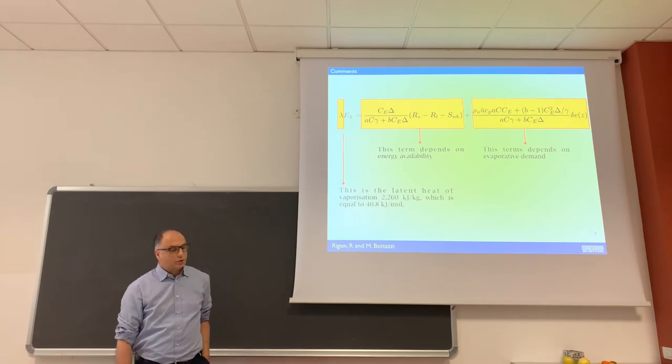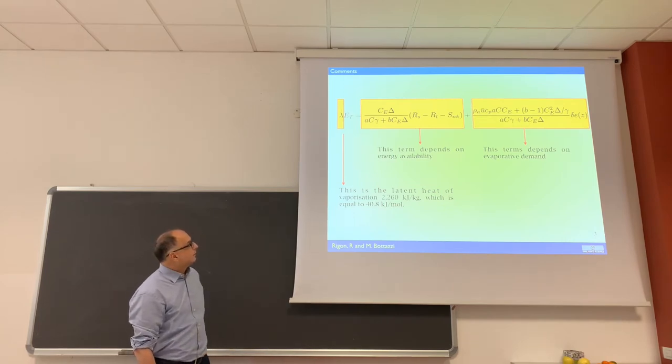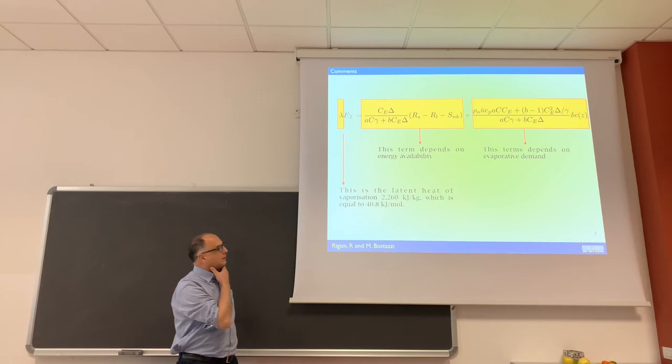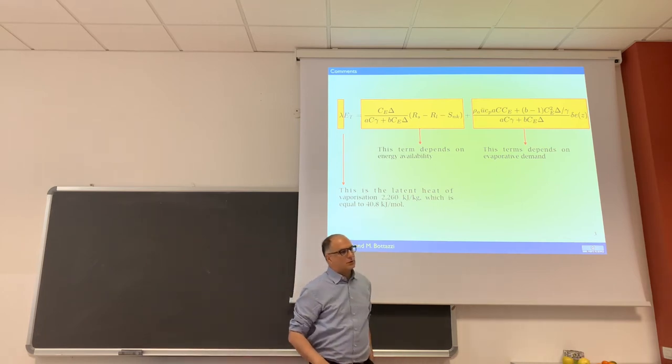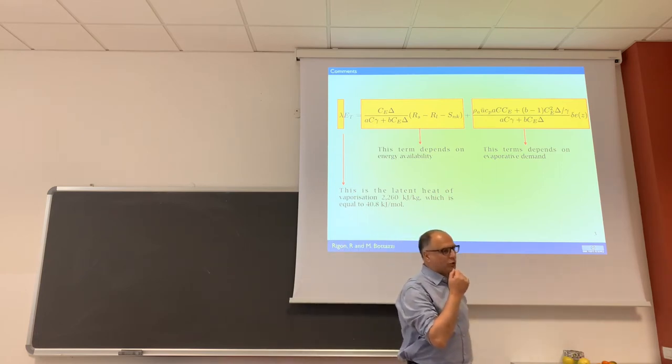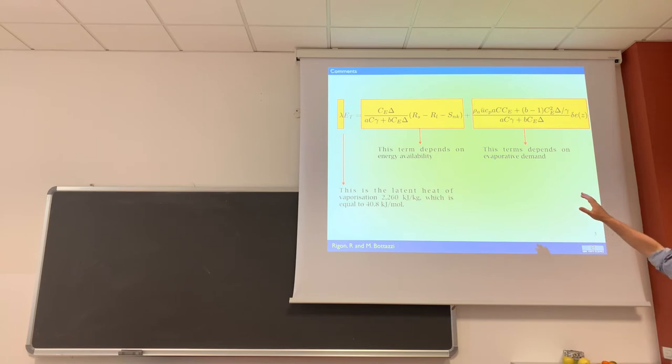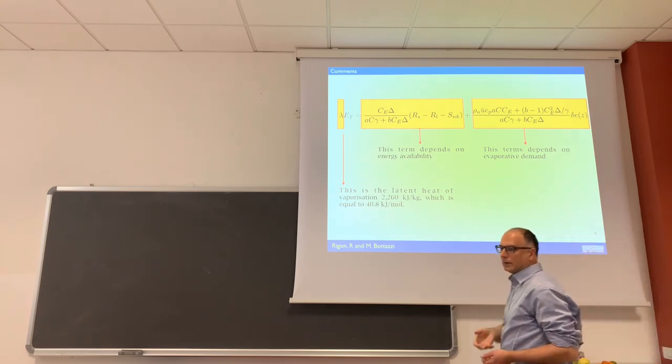Usually, maybe you see this one in this way. The first term depends on the radiation, and the second term depends on what is called evaporative demand. In principle, the solution shows that you can have evapotranspiration even if you don't have radiation, zero budget in the radiation, because you just have evaporative demand from the atmosphere.